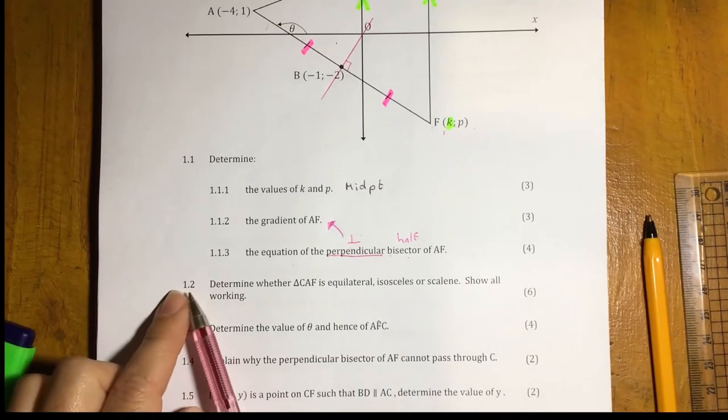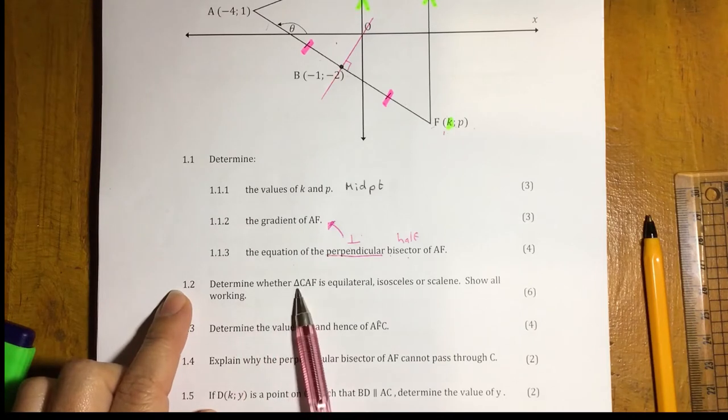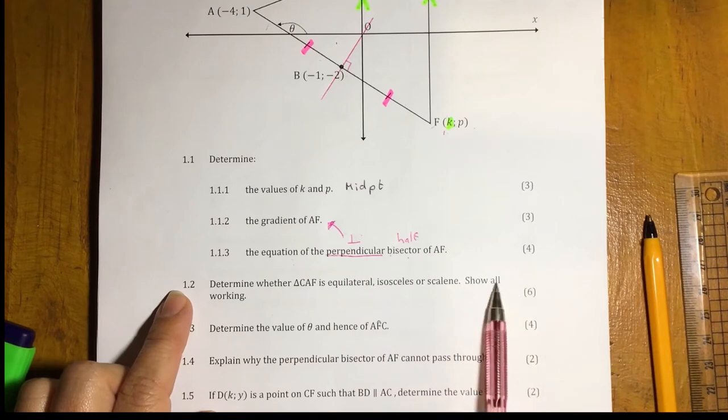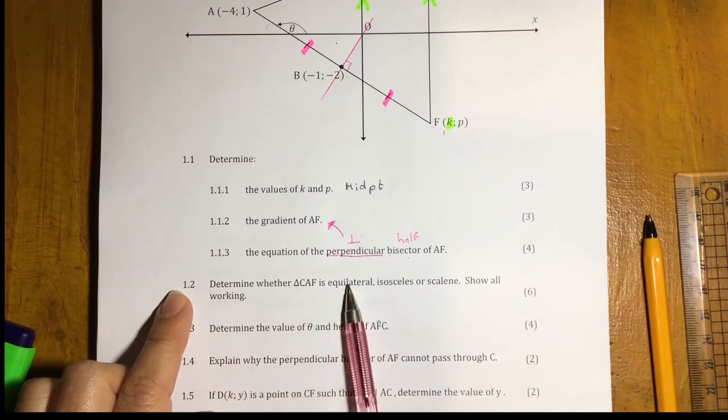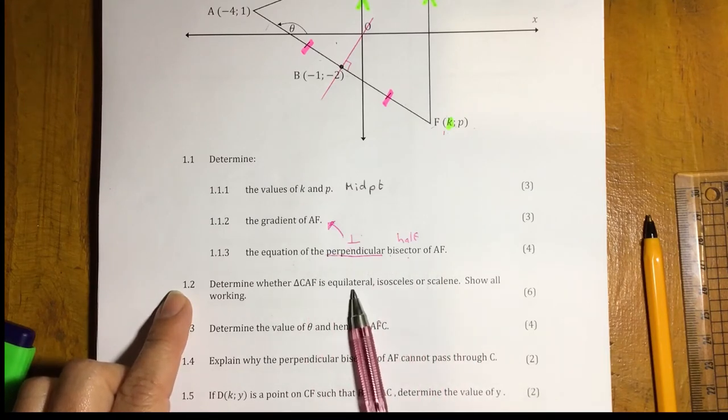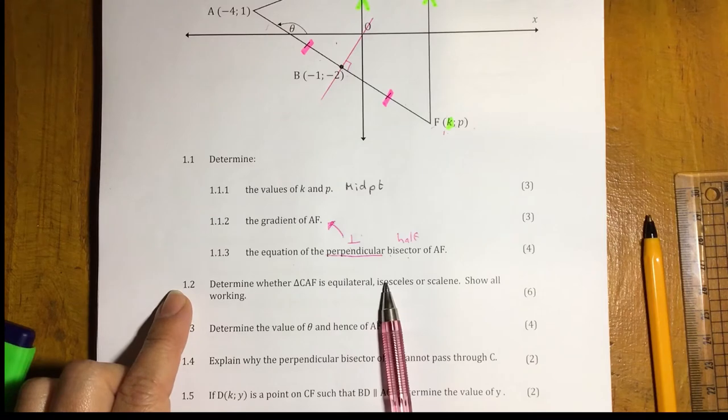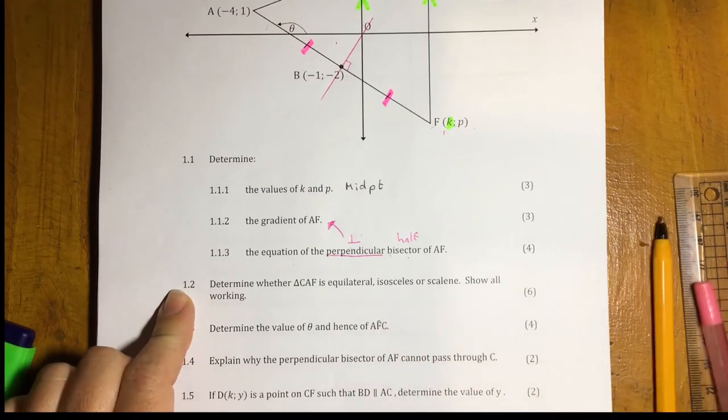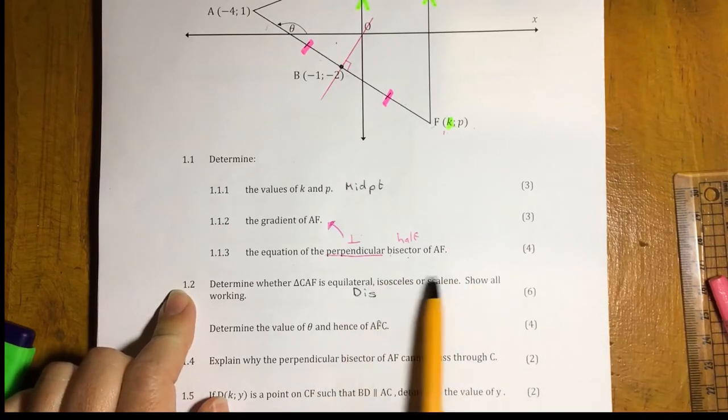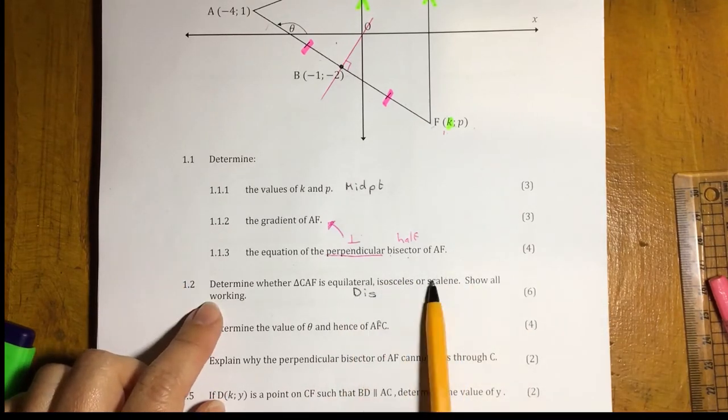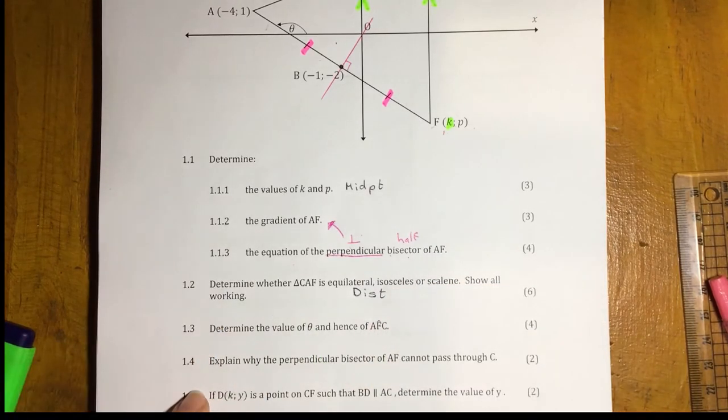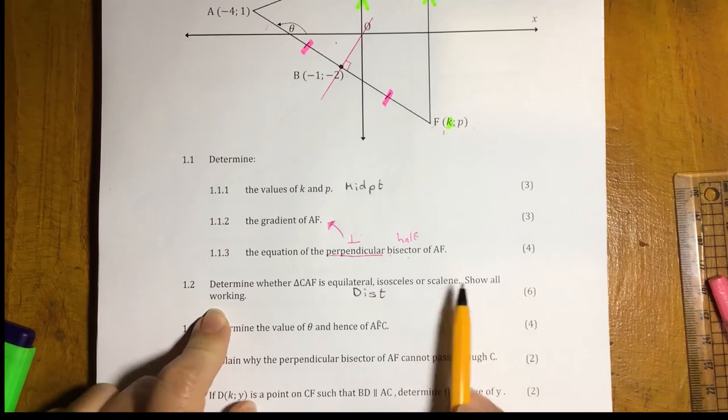Right, moving on to 1.2. Determine whether triangle CAF is equilateral, isosceles, or scalene, show your working. So, my first thought is, what properties of my triangle do these describe? And it's talking about the side lengths, which means that we're going to use our distance formula. And we're going to have to work out the length of each of the lines and see what the relationship is to decide what type of triangle this is. And don't forget to give your conclusion.